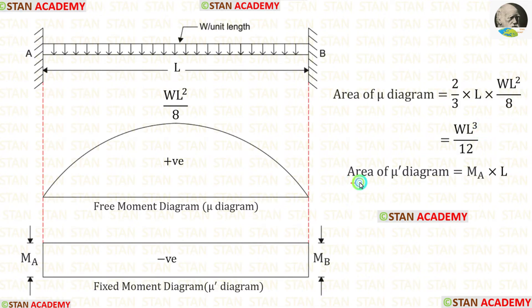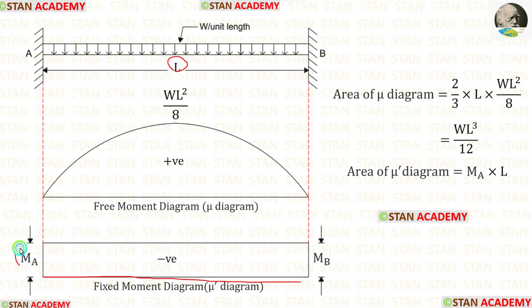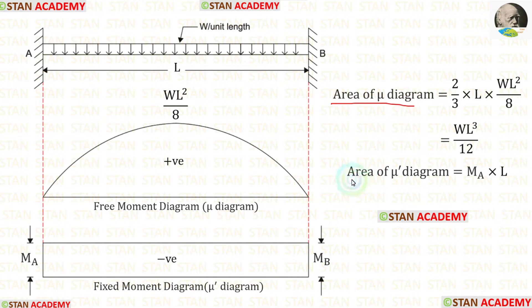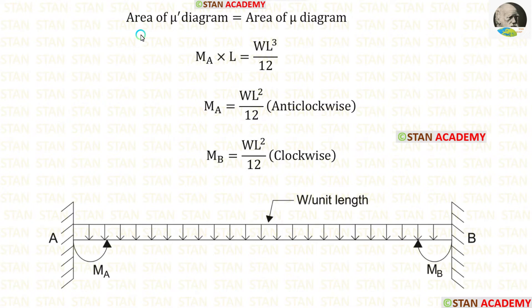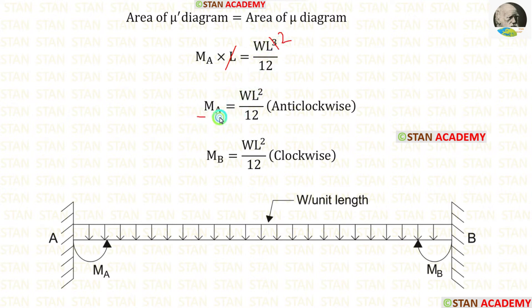Now let us find the area of the mu-dash diagram. This is a rectangle. For this rectangle the length is L and the width is Ma. When we multiply Ma with L we will get the area. The area of the mu diagram and the area of the mu-dash diagram will be the same, so let us equate both of them. We can eliminate L. Finally we are getting Ma which is equal to WL² upon 12.